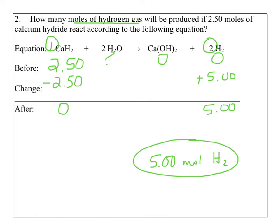Just for fun, let's fill in the rest of the chart. Water has a coefficient of 2 as well, same as hydrogen, so we'd see a 5 there — but subtracted, because it's reacting. For calcium hydroxide, it has a coefficient of 1, just like calcium hydride, so that's 2.50 as well — but added this time because it's being produced.